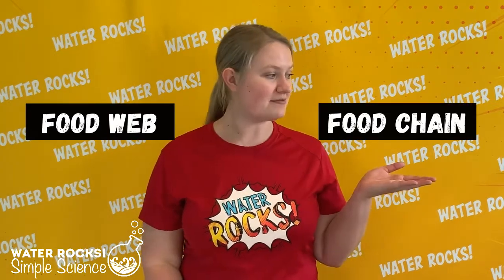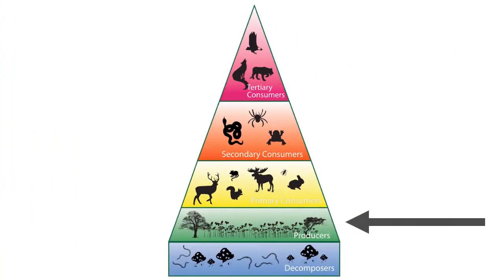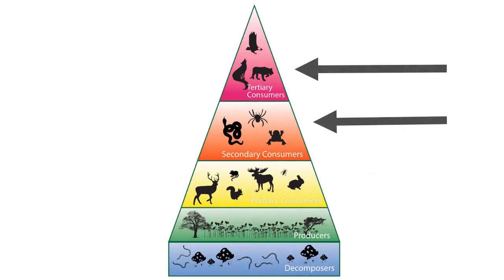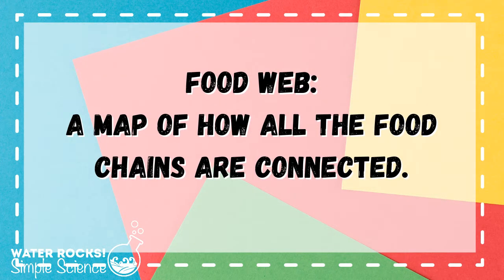Before we get started, let's define the difference between a food web and a food chain. A food chain is the order in which living things depend on each other for food. Producers are on the bottom, next comes herbivores, next predators, and finally decomposers. In other words, what eats what? A food web is a map of how all the food chains are connected.